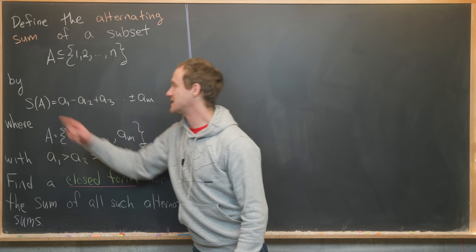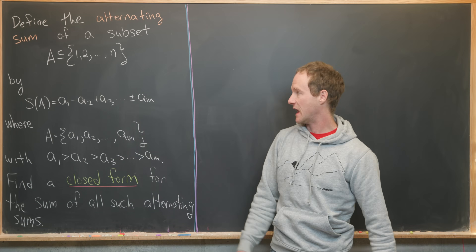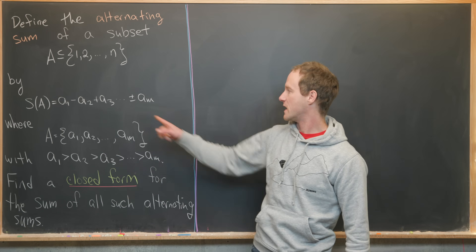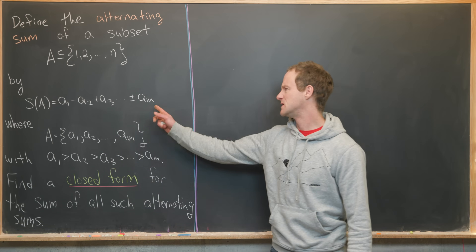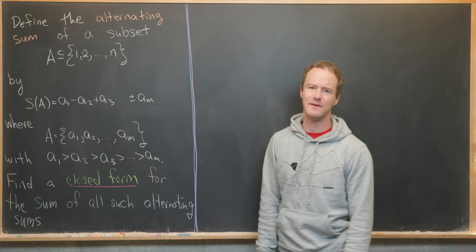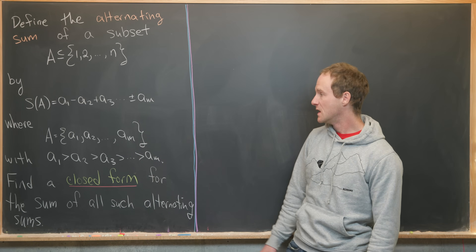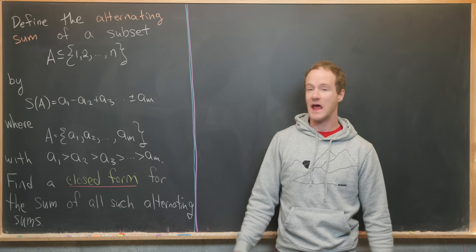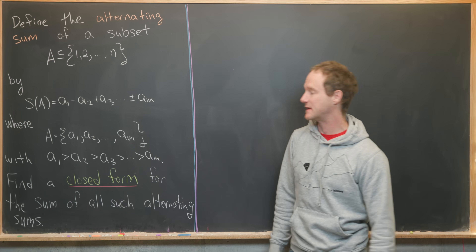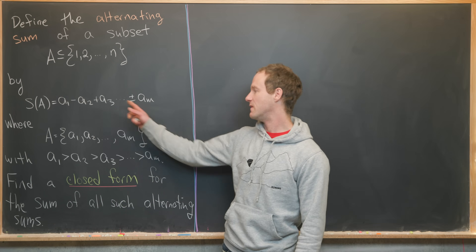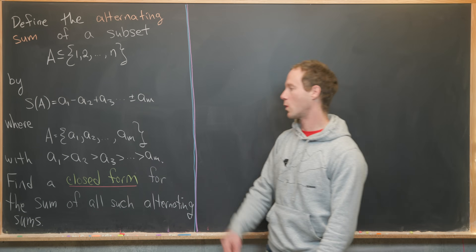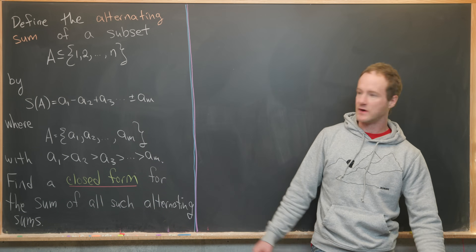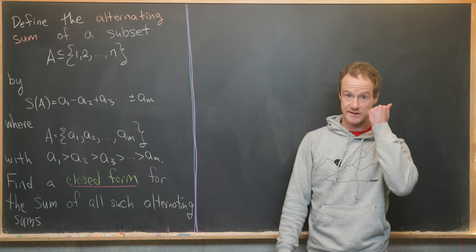We'll use the notation S of A, and it will be A₁ minus A₂ plus A₃, all the way up to plus or minus A_M, depending on if M is even or odd. That is where A is the subset A₁, A₂, all the way up to A_M, in decreasing order, so that A₁ is bigger than A₂ is bigger than A₃, and A_M is the smallest.